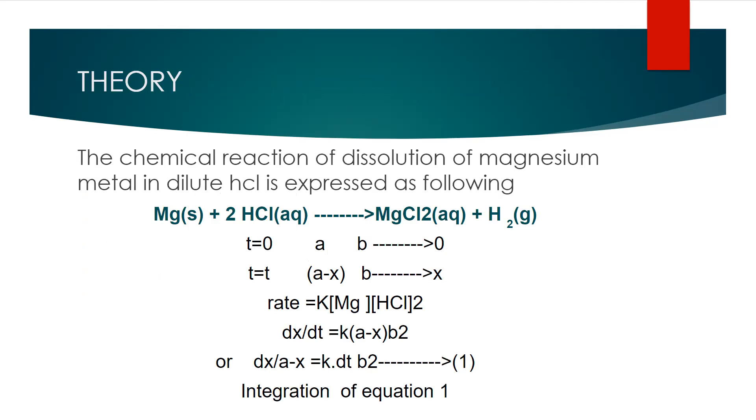There is some derivation of this experiment which is: if t equals zero then magnesium will be A and hydrochloric acid will be B. If t equals t, then magnesium will be A minus X and hydrochloric acid will be B.